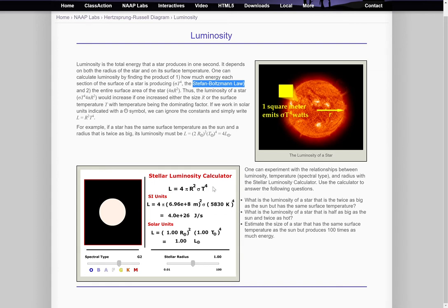Surface area being 4πr², so 4π is going to be the same for any star, we're assuming every star is a sphere, and then surface temperature.